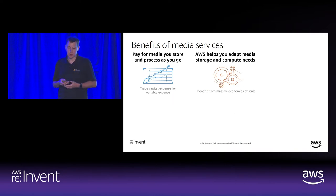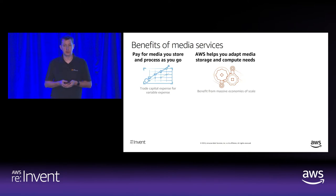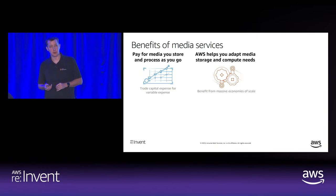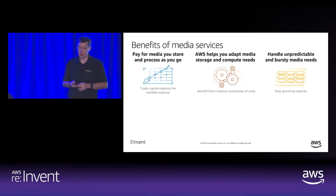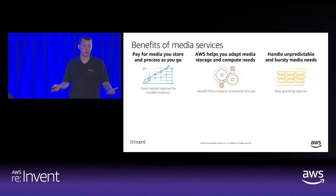You adapt your media storage and compute needs, taking advantage of AWS's very high economies of scale. Because AWS has very large data centers, we're able to deliver computation at a very low cost. The unpredictability and burstiness is handled natively by media services.